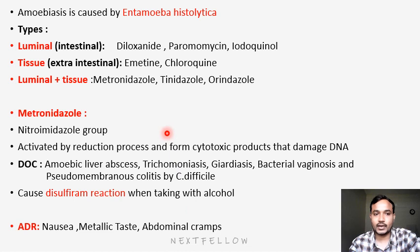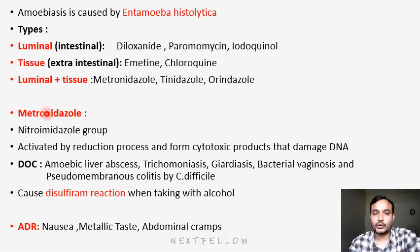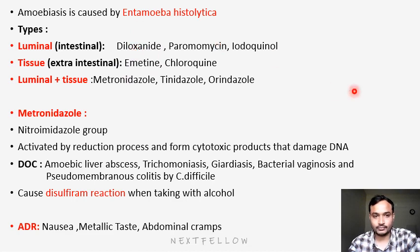This is regarding amoebiasis. The main things to remember are the types — luminal, tissue, luminal plus tissue — the important drug metronidazole, and which drugs are beneficial in different types of amoebiasis. That's all. Thank you.